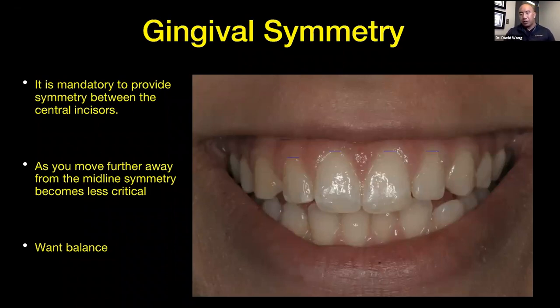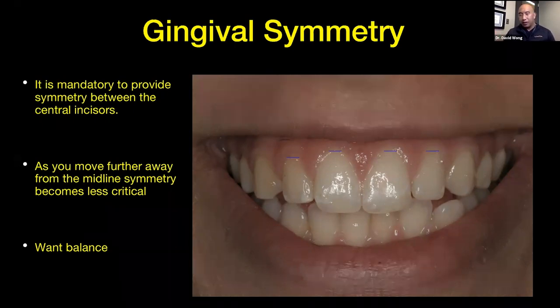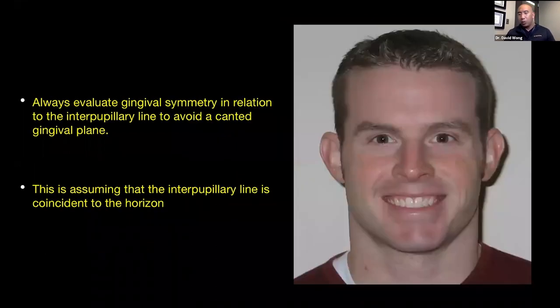For example, the centrals are even but the laterals — number 10's tissue is higher up than number seven — this is something we notice less due to the symmetry between the two centrals. I also like to take a full face view. You always measure the central incisors to the inter-pupillary line. Some people say the inter-pupillary line isn't always accurate, but it works pretty well.